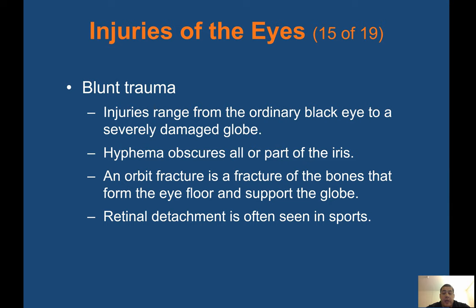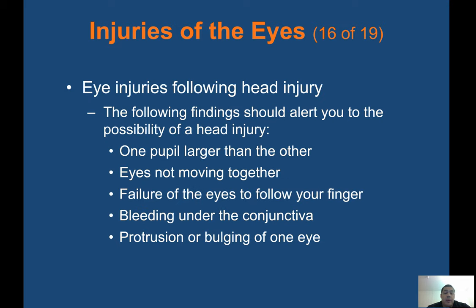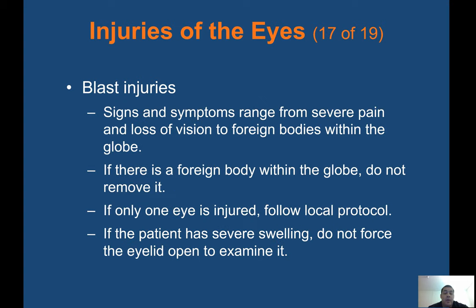Blunt trauma injuries range from an ordinary black eye to a severely damaged globe. Hyphema obscures all or part of the iris. An orbital fracture is a fracture of the bones that form the eye floor and support the globe. Retinal detachment is often seen in sports. Eye injuries following head injury — the following findings should alert you to the possibility of a head injury: one pupil larger than the other, eyes not moving together, failure of the eyes to follow your finger, bleeding under the conjunctiva, and protrusion or bulging of one eye. Blast injuries: signs and symptoms range from severe pain and loss of vision to foreign bodies within the globe — do not remove them. If the patient has severe swelling, do not force the eyelid open to examine it.